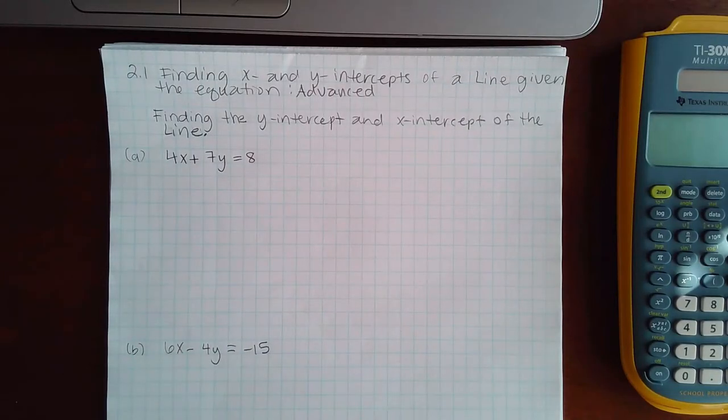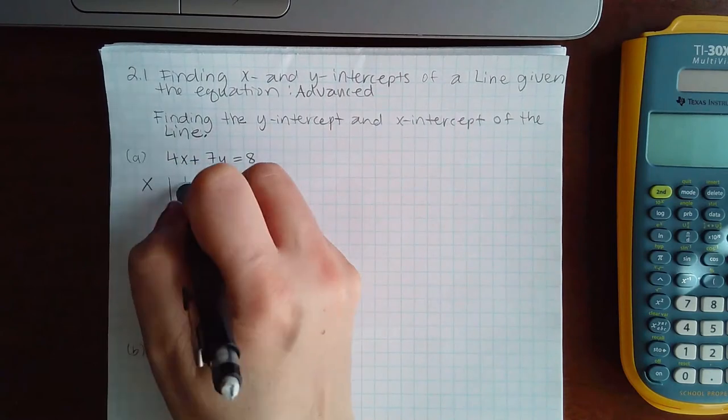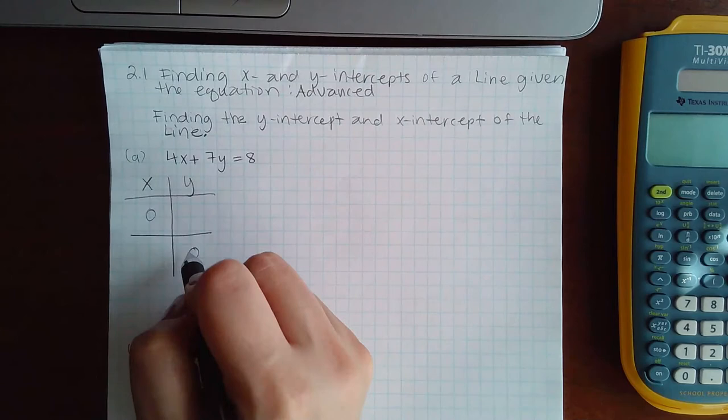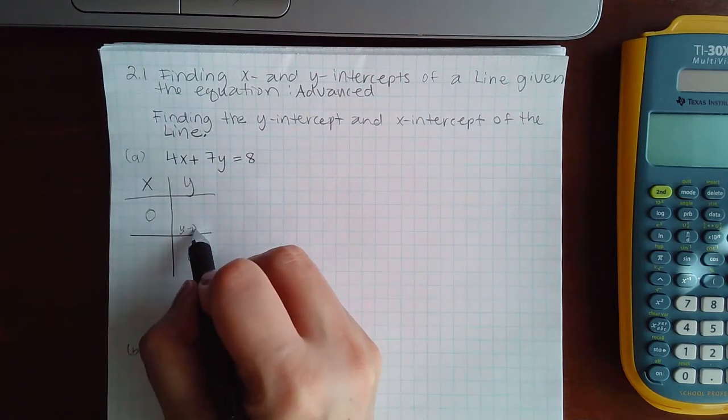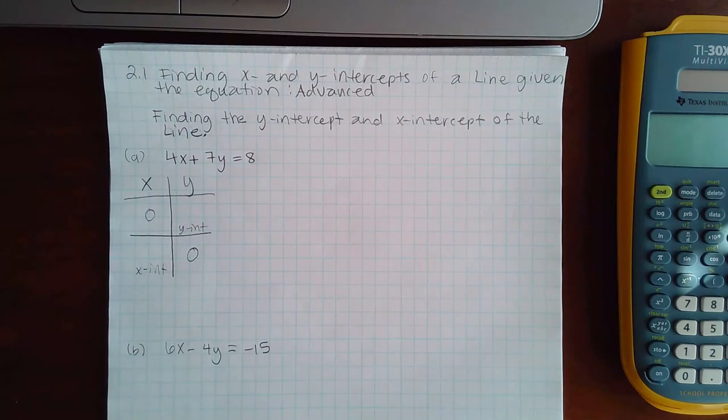Here we have finding x and y intercepts of a line given the equation, and this is advanced. There really is nothing different happening here than the previous topic. You still do zero and zero. This will be the y intercept. This will be the x intercept.